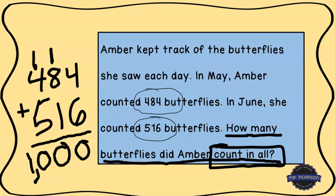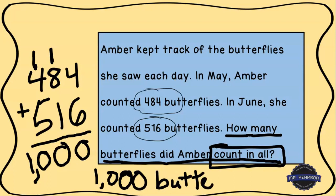Our answer is referring to what was asked in the word problem, so we write 1000 butterflies — because that is what Amber was counting. Amber counted 484 butterflies in May and 516 in June; when we add them together we get a sum of 1000 butterflies. Hopefully you followed along and got that correct. This is Mr. Pearson — I'll see you next time with another word problem to solve.